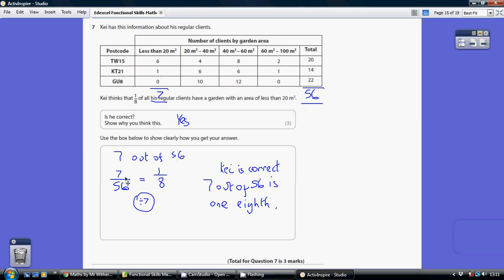Now 7 over 56, 7 out of 56, well that is an equivalent fraction to 1 over 8. If you divide top and bottom by 7 you do indeed get an eighth. So 7 out of 56 is the same as an eighth. So Kai is correct. 7 out of 56 is indeed one eighth.